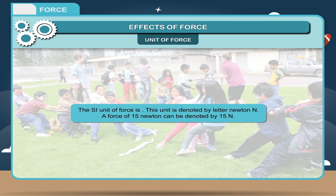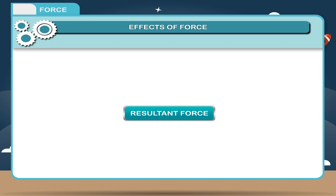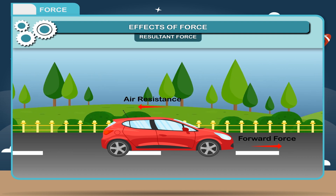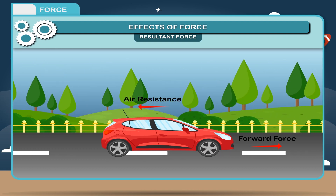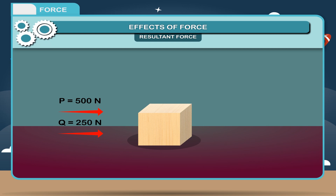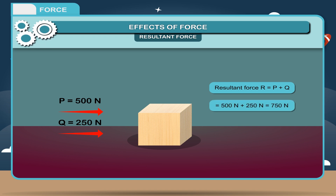Unit of force: The SI unit of force is Newton, denoted by the letter N. A force of 15 Newton can be denoted by 15N. Resultant force: When a number of forces are acting on a body, their effects can be expressed by a single force called the resultant force. When two forces act in the same direction, their resultant R = P + Q = 500 Newton + 250 Newton = 750 Newton.